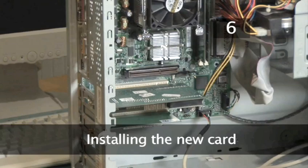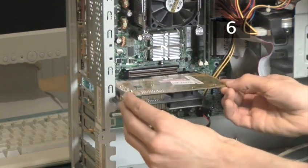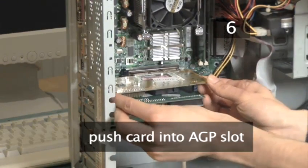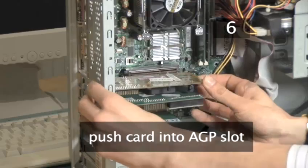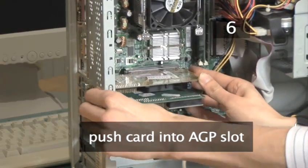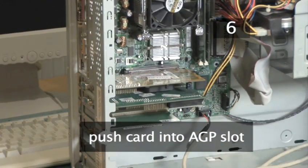To put the new graphics card into the computer simply reverse the steps, pushing the card back into the AGP slot, replacing the screw, then replacing the side panel.